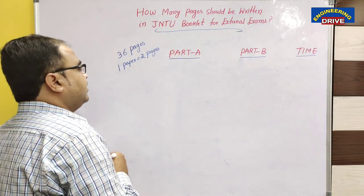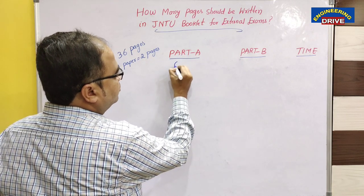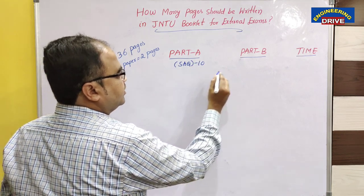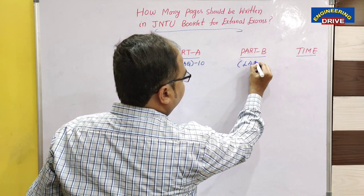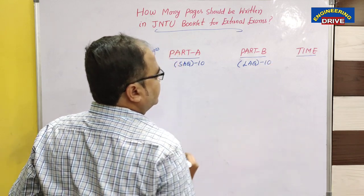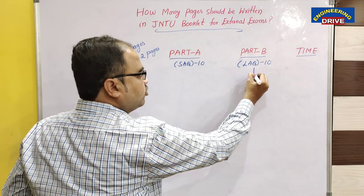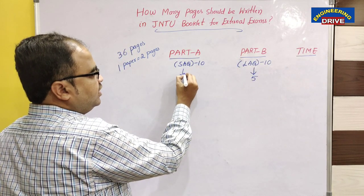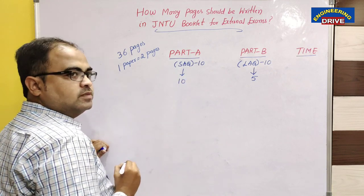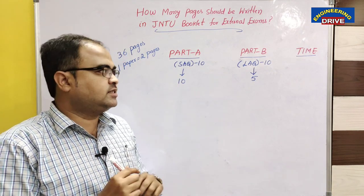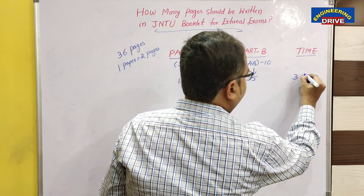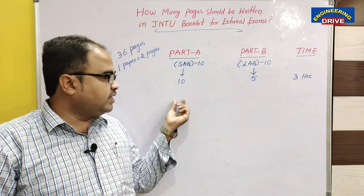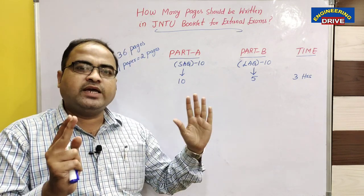In JNTUA, the booklet consists of 36 pages. One paper is equivalent to 2 pages, so approximately 18 papers will be there in the JNTUA booklet. In Part A, 10 short answer questions will be given. In Part B, 10 long answer questions will be given, out of which you need to write 5, as there is internal choice among the units. So finally, in the allotted time of 3 hours, you need to complete 10 short answers and 5 long answers.